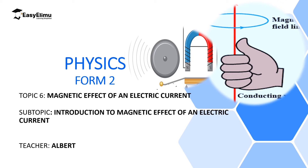Welcome to ECLIMU, Learning Simplified, and welcome to our new topic: Magnetic Effect of an Electric Current. In the first topic of Form 2, we discussed magnetism, and we said magnetism is the study of magnets, where we discussed magnets and how to magnetize materials.